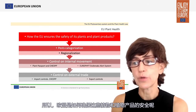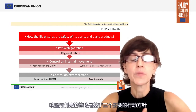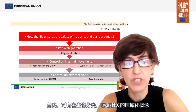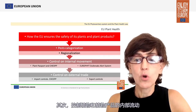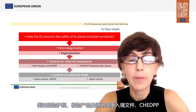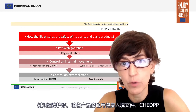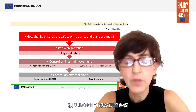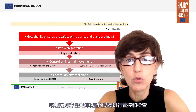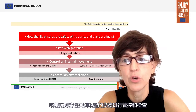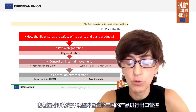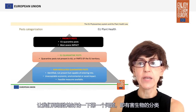How does the EU ensure the safety of its plants and plant products? The strategy of the European Union is based on three main action lines: first, the pest categorization with the associated concept of regionalization; then, the control on the internal movement of plants and plant products, with tools like the plant passport, the Common Health Entry Document for Plant Products (CHEDPP), and the EUROPHYT outbreaks alert system; and then it exerts control on external trade, applying controls on goods being imported into the EU as well as export controls for products leaving the EU going to a third country.